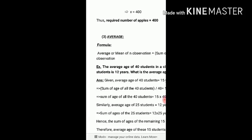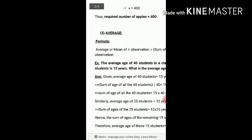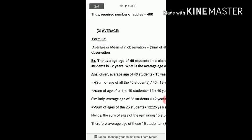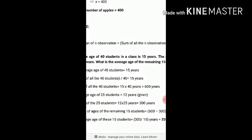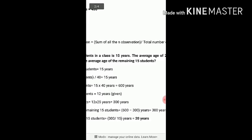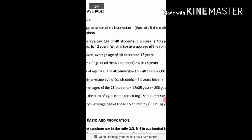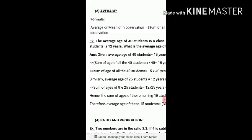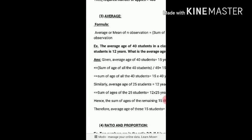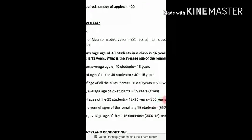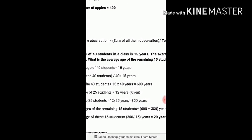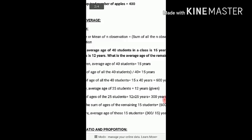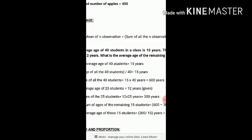This is the average or mean formula. The average is the sum of all n observations divided by the number of observations n. Now here is a question: the average age of 40 students in a class is 15 years.